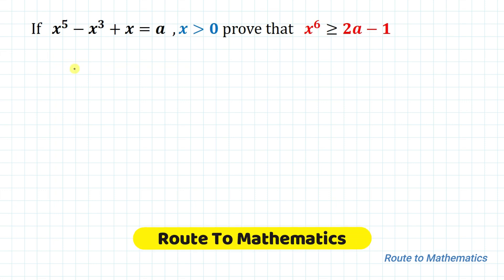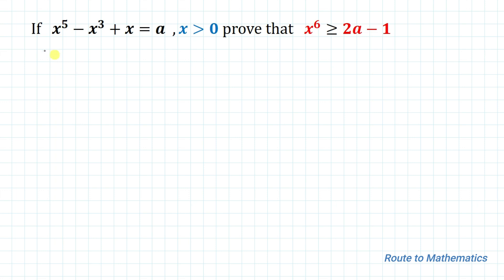Hello everyone, welcome to Root 2 Mathematics. In this video we are going to solve an interesting Olympiad question. The given question is: if x⁵ - x³ + x = a, and the given condition is x > 0, then prove that x⁶ ≥ 2a - 1. So without any delay, let's start the solution.